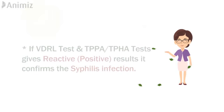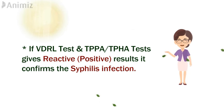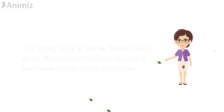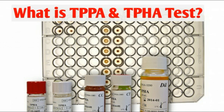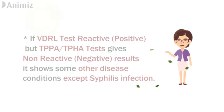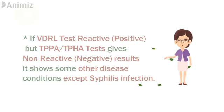If the patient is showing a positive screening test, the confirmatory test should also be done. If both the screening test and the confirmatory test give positive results — that means both give reactive results — that indicates the patient has a syphilis infection. If only the screening test is positive, we cannot confirm whether the patient has syphilis; both should show positive results. If the patient is showing VDRL positive but TPPA or TPHA negative, this indicates the patient is not having a syphilis infection but may have one of the other disease conditions mentioned previously.